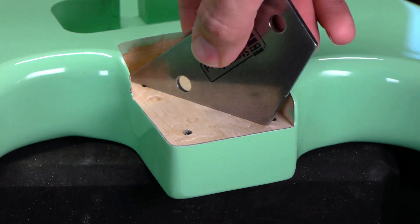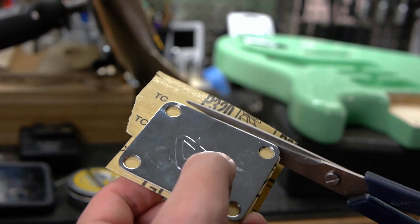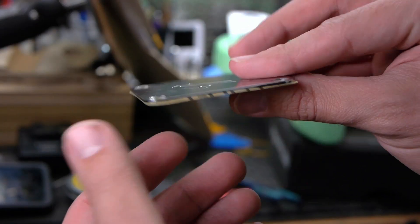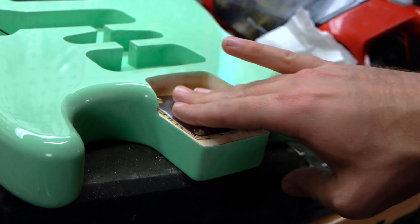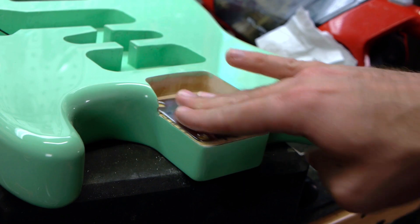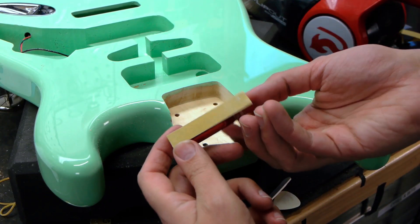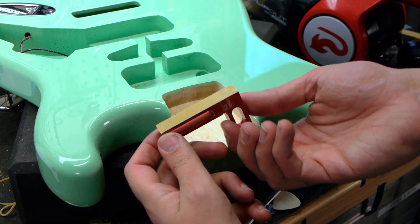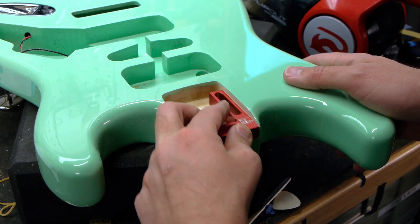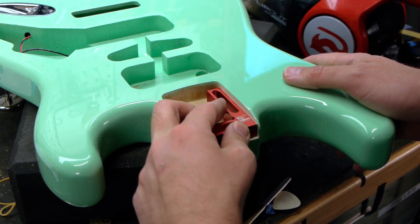After routing everything as cleanly as possible, I'll put some sticky back sandpaper on the back of the neck plate and use that as a sanding block just to smooth everything out and catch any stray wood fibers. This neck was also feeling dangerously tight in the pocket, so I'll also use some sticky back sandpaper on my Woodpecker mini square and use that as a sanding block on the sides of the neck pocket.